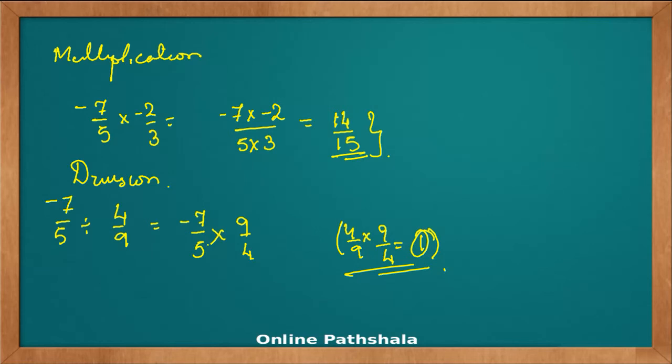What I have to do here is multiply with the reciprocal of 4 by 9, which is 9 by 4. So minus 7 into 9 gives me 9 times 7 is 63, and 5 times 4 is 20. So minus 63 by 20 is my answer.